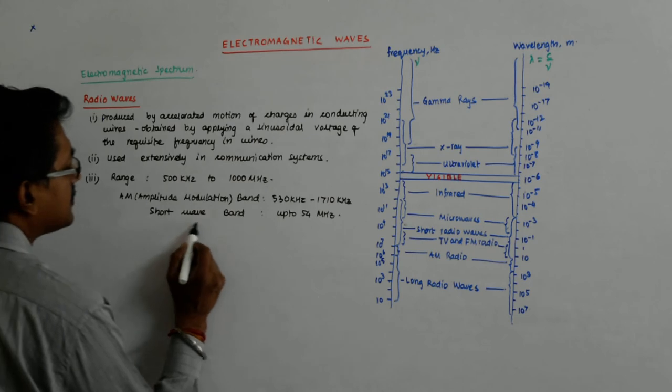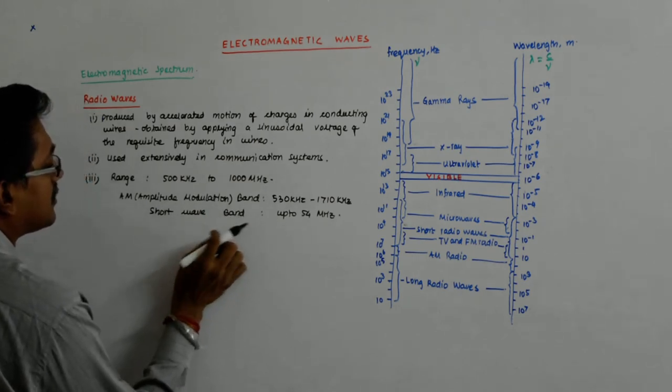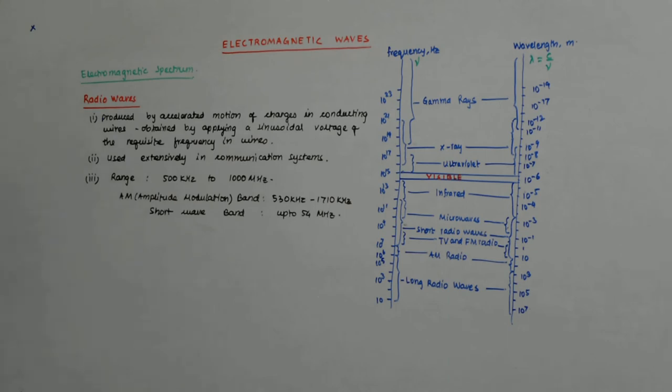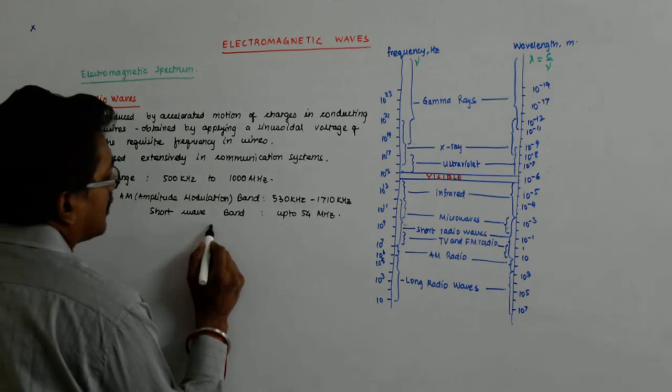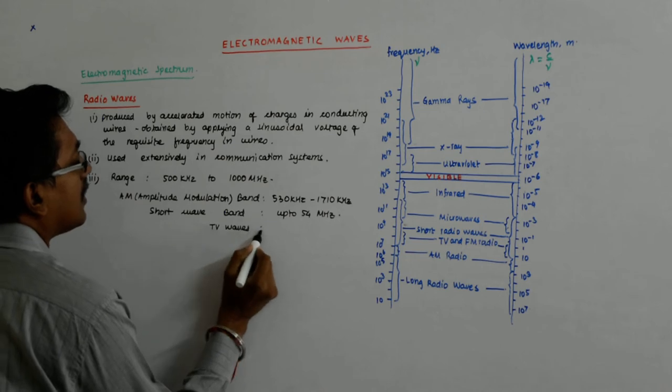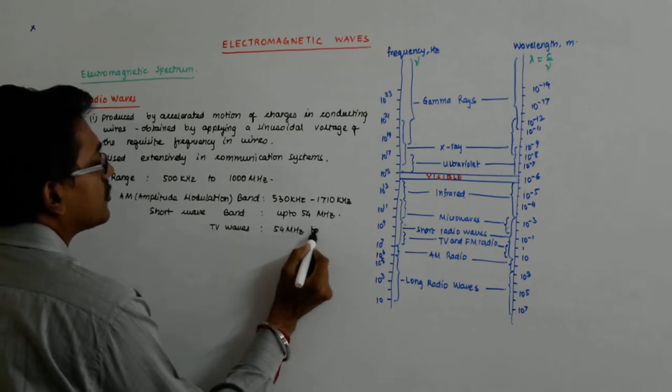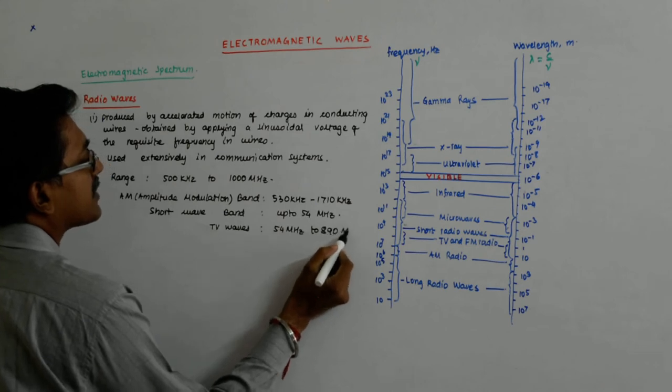Then we have TV. The frequencies that are used in TV - TV waves are from 54 megahertz to 890 megahertz.